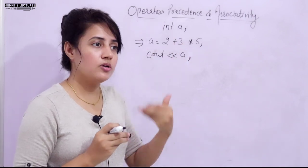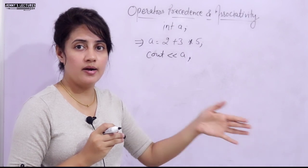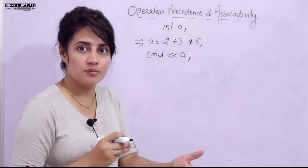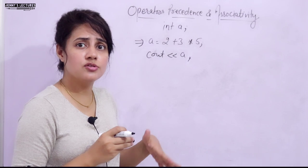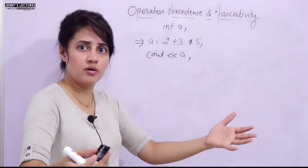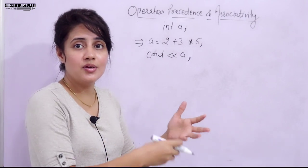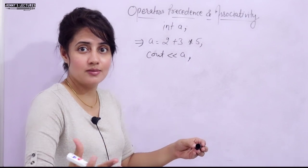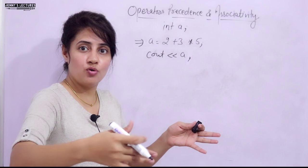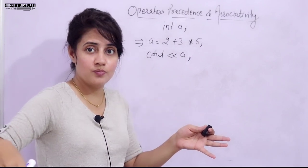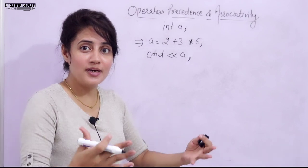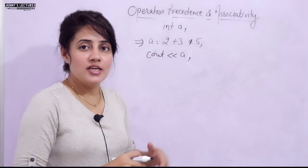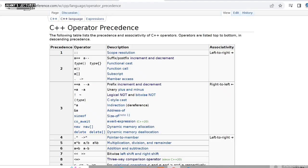Think of it like standing in a queue at a bank. If a VIP comes, their work is done first because they have higher priority — they don't stand in the queue. Similarly, operators with higher precedence are executed before those with lower precedence.